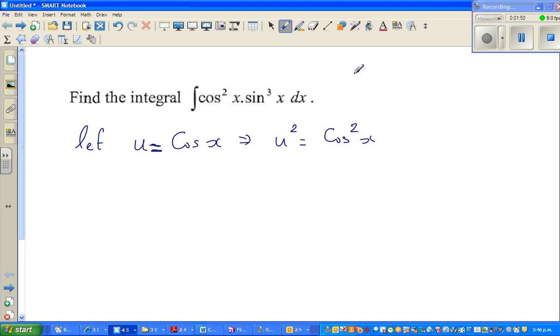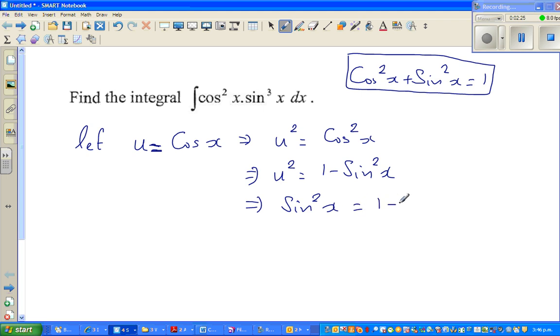So what do you know about cos squared? I hope you know cos squared x plus sine squared x equals 1. This is one of the most common or famous identities. This is a trig identity. So cos squared is 1 minus sine squared. So this implies u squared is 1 minus sine squared x. But I want to write in terms of sine squared x, so this implies sine squared x is 1 minus u squared.